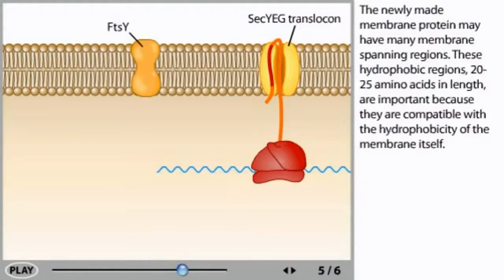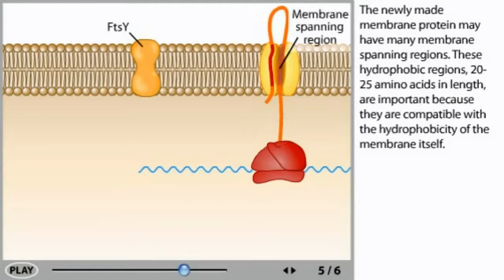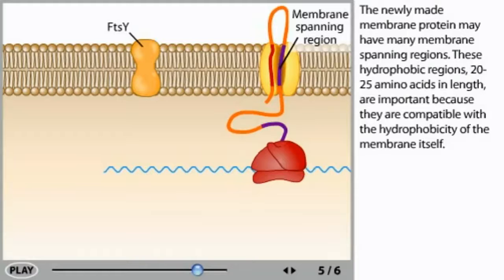The newly made membrane protein may have many membrane-spanning regions. These hydrophobic regions, 20 to 25 amino acids in length, are important because they're compatible with the hydrophobicity of the membrane itself.